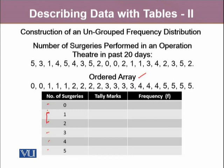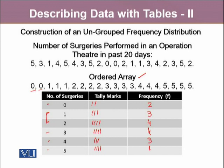To construct the tally marks: there are two zeros in our data, so we construct two tallies; three ones; four twos; four threes; three fours; and four fives. We then note down their frequencies: 2, 3, 4, 4, 3, and 4. This is how we construct an ungrouped frequency distribution.